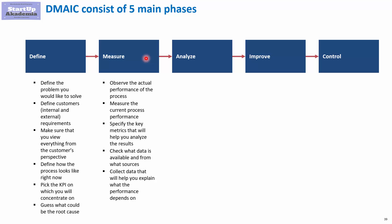Measure is about gathering data — you observe the actual performance of the process. You measure the rate of defects and also other KPIs and metrics that seem to be linked to the performance of the process you're improving, which will come from your guesses. You also have to check whether you have sufficient historical data, and if not, you may be forced to collect additional data to see whether something is impacting the problem you are trying to solve.